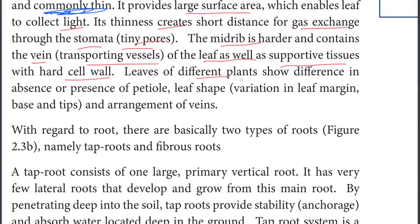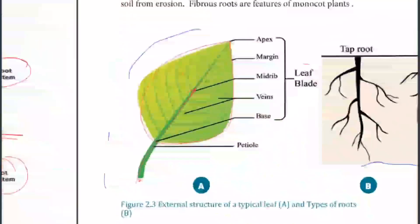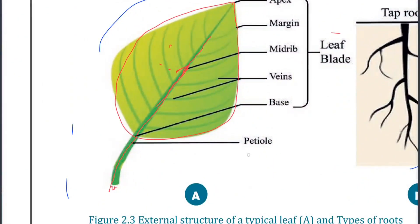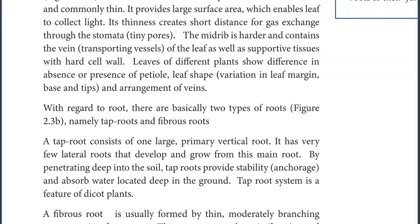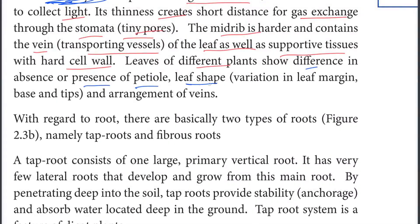Leaves of different plants show differences in the absence or presence of a petiole. There is also variation in leaf shape, leaf margin, base, tips, and arrangement of veins.